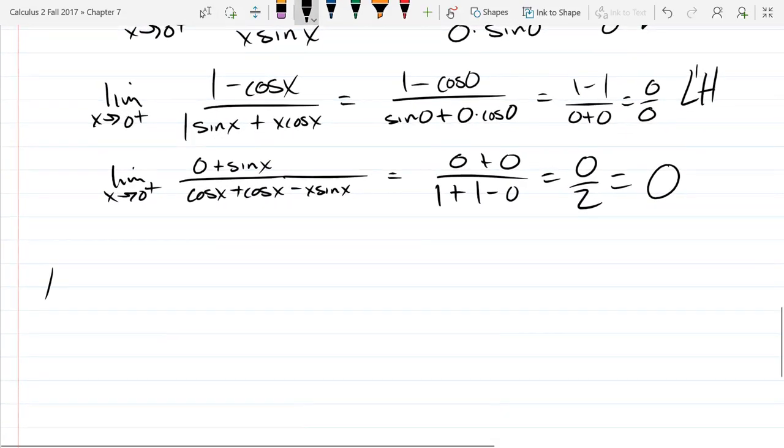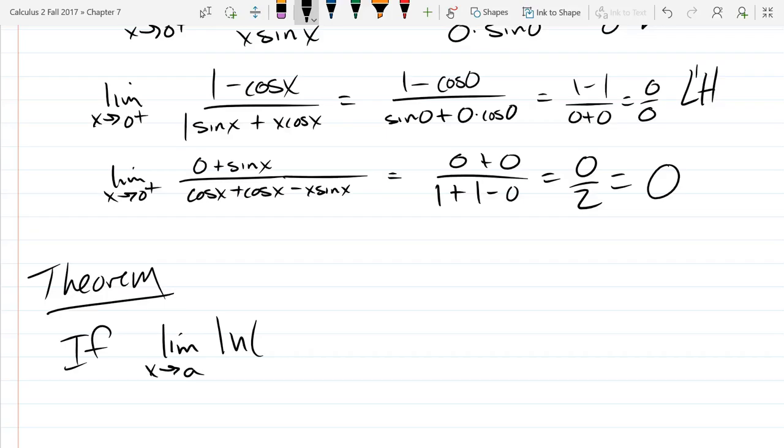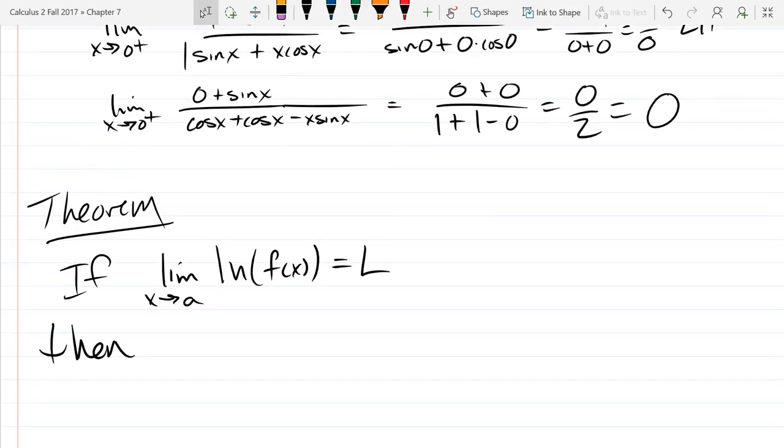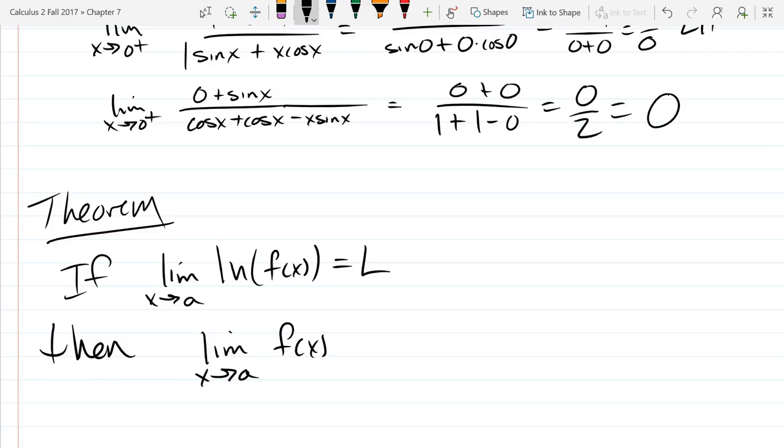This will be a real no-dough theorem. So if the limit of the natural log of F equals L, then the limit, so if we take away the natural log, this will be ln inverse of your original limit, which, of course, is e to the L.